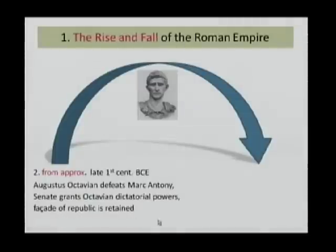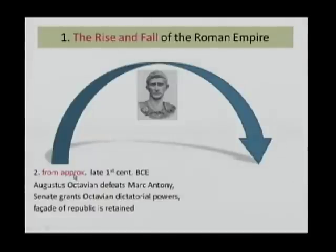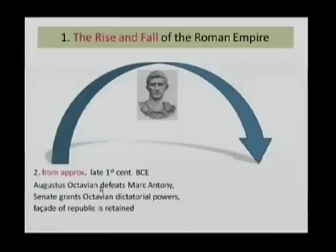Now, for points two and three, you have to state that it's approximate. If students don't write approximate, I also take off a point. We want to emphasize the idea that there are no specific dates. So, here we've got — this description must relate to the first part of the phrase, which is the rise. We've got late first century BCE: Augustus Octavian defeats Mark Antony, the Senate grants Octavian dictatorial powers, and the facade of a republic is retained — but they're really on the course to empire.